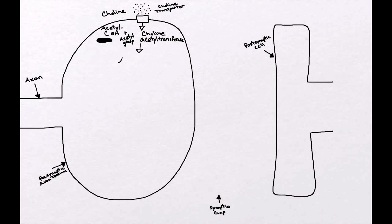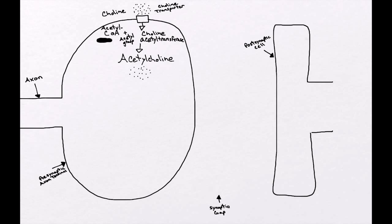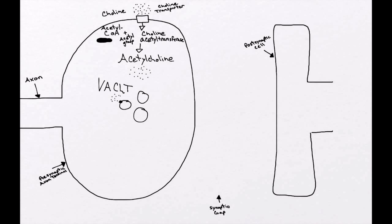Now that we have acetylcholine inside the cytoplasm of the cell, we need to do something with it. We need to store it so that it can be used at the appropriate times. The acetylcholine diffuses into the cytoplasm and is transported into little storage buckets called vesicles. To move into these vesicles, we have a very specific transporter — the vesicular acetylcholine transporter — which moves acetylcholine into the vesicles, allowing us to store it and ultimately release it when we need it.